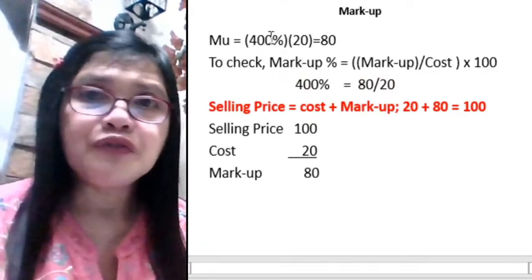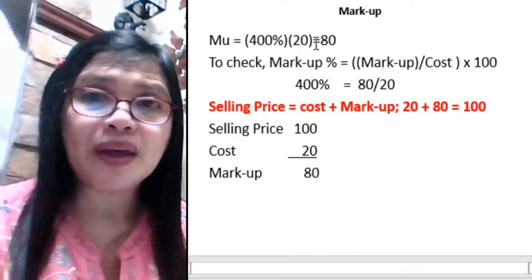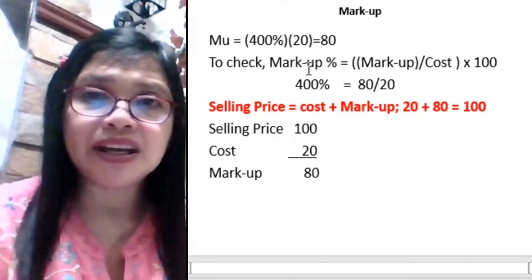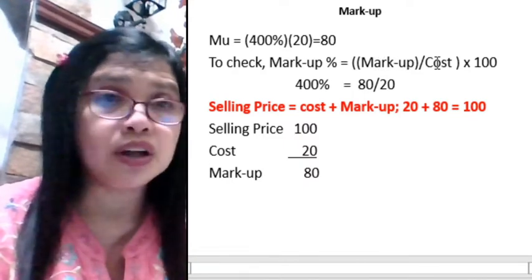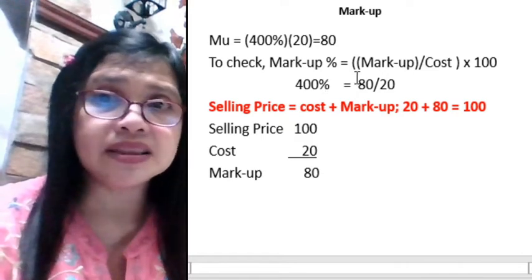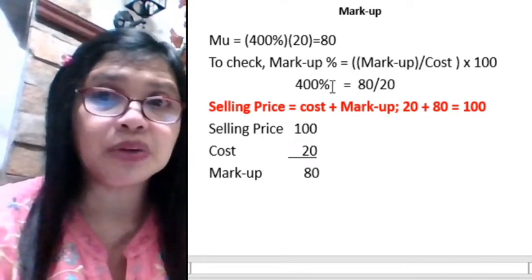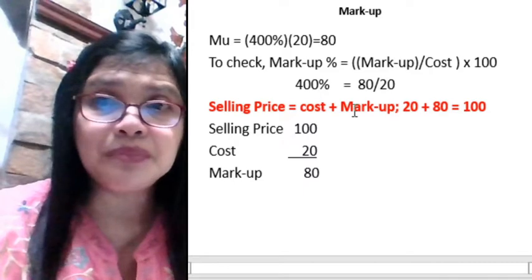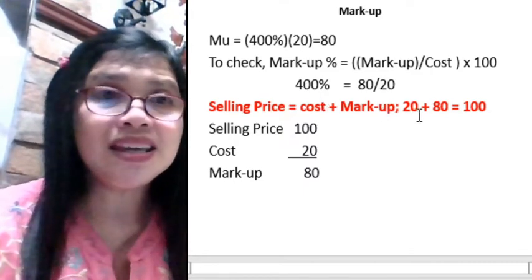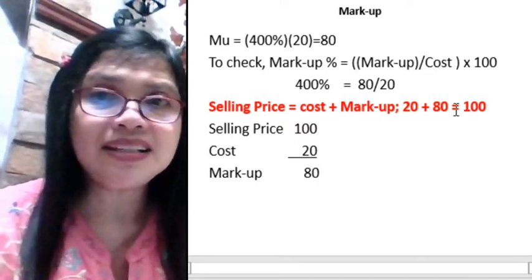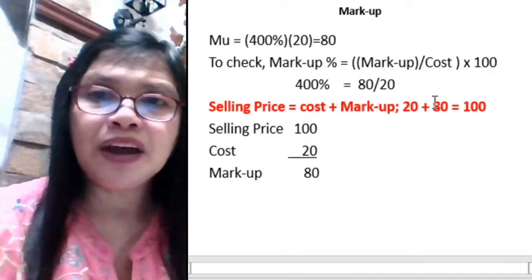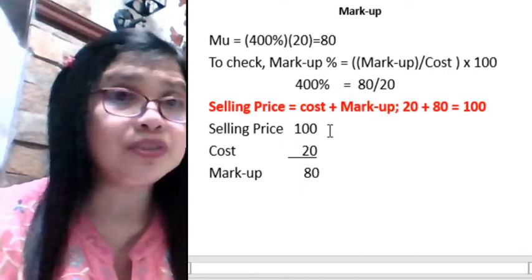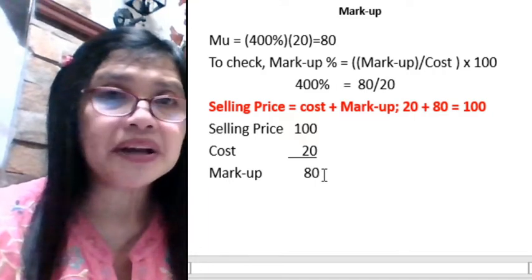Markup is 400%, the desired markup percentage, times the cost of 20 — so your markup is 80 pesos. To check: markup percentage equals markup over cost times 100%, so 80 divided by 20 equals 400%. The selling price equals cost plus markup: 20 plus 80 equals 100. So your selling price is 100 and your markup is 80 pesos.